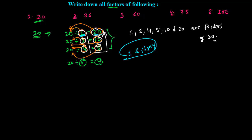Similarly, here we need to discuss 36. What are the numbers that can divide 36? If you see, 36 can be divided by 1 in 36 times. And since 6 is at the end, I am sure it is divisible by 2 also. So 36 can be divided by 2 — 18 times.